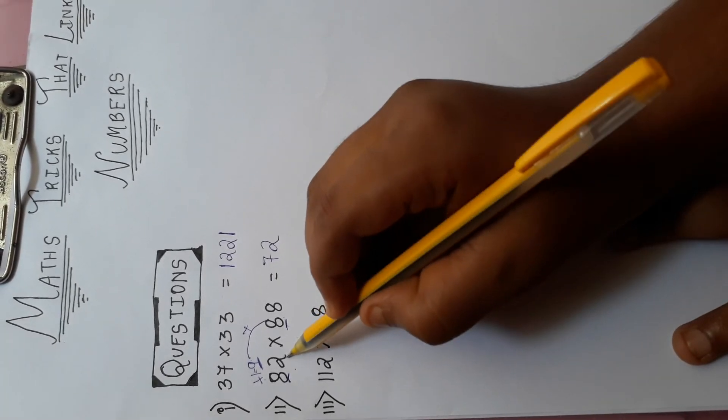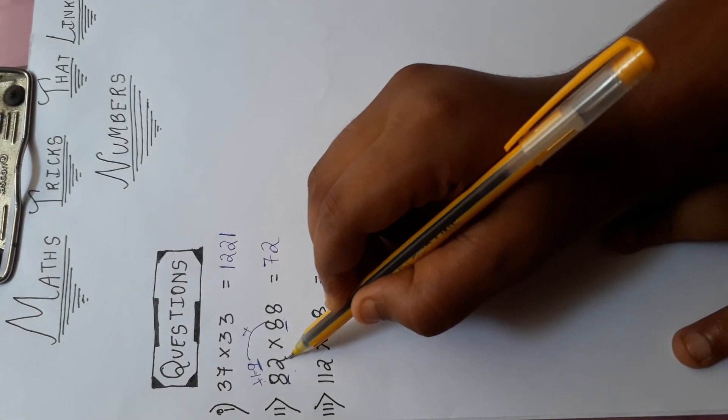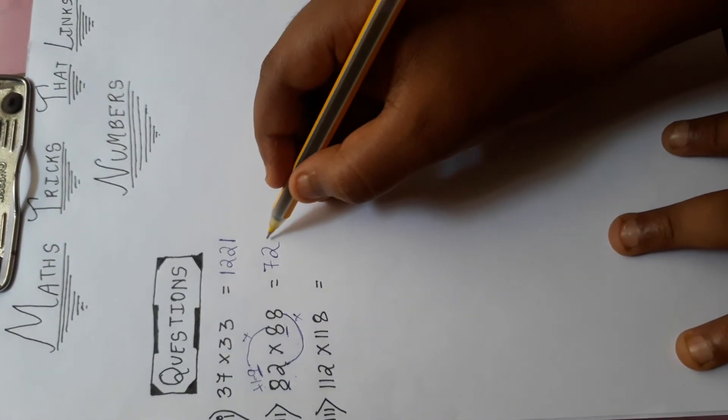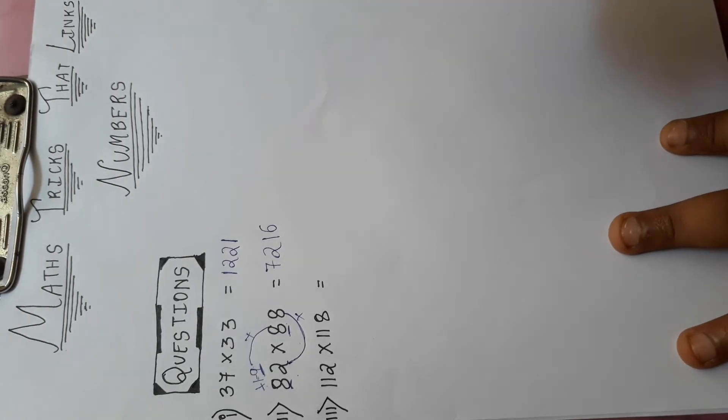Now this one space, I want to multiply 8 into 2. 8 twos are 16. Yes, of course.